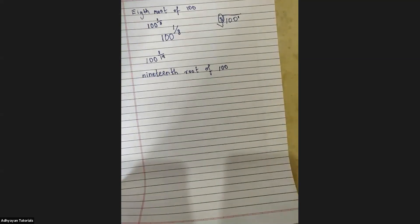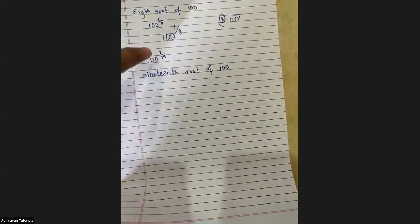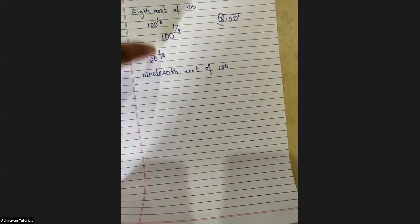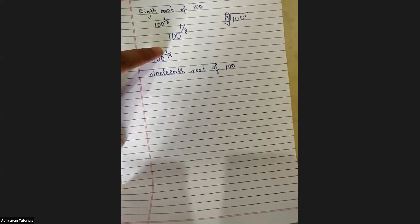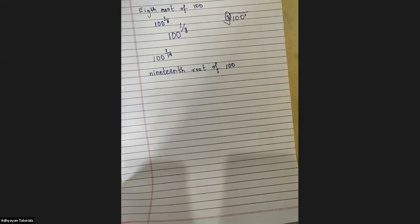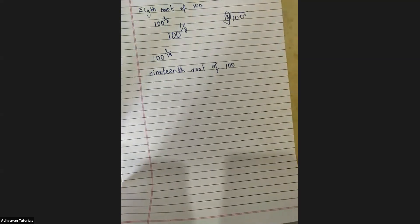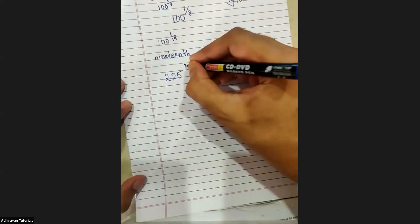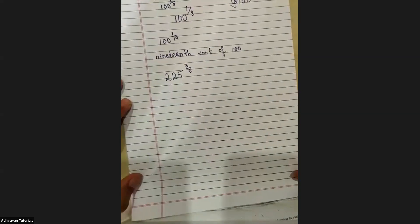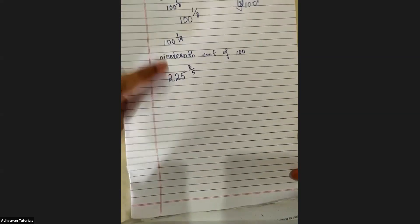They'll also include the power and we'll have to learn how to read or write this. Power is also there. Previously power was one so we did not have to say anything about it. But now they can tell us that power is two or five. Let's take a simple example — 225 raised to three upon five. If there was one on top, we would have written it as fifth root of 225. But now we also have to talk about what this is.